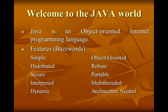The buzzwords Java has are: simple, object-oriented, distributed, robust, secure, portable, integrated, multi-threaded, dynamic, and architecture neutral.